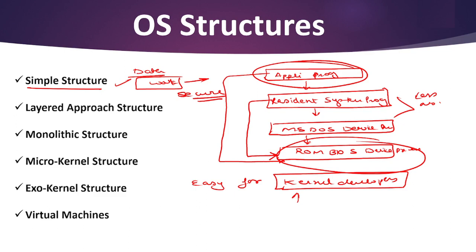The entire operating system breaks if just one user program malfunctions. If there is any error in a user's program, the system hangs and there are high chances of data loss for everyone. This is the major disadvantage — we do not want to use such an operating system.